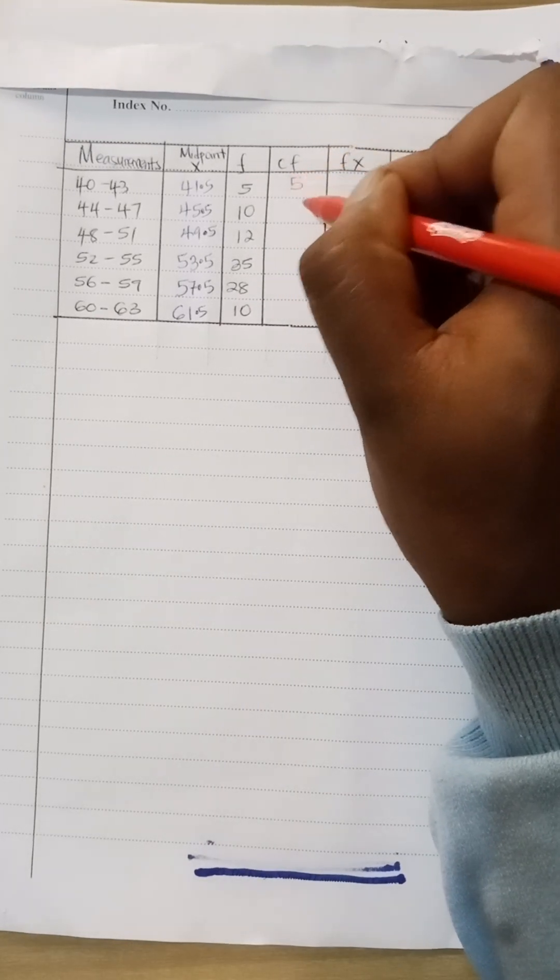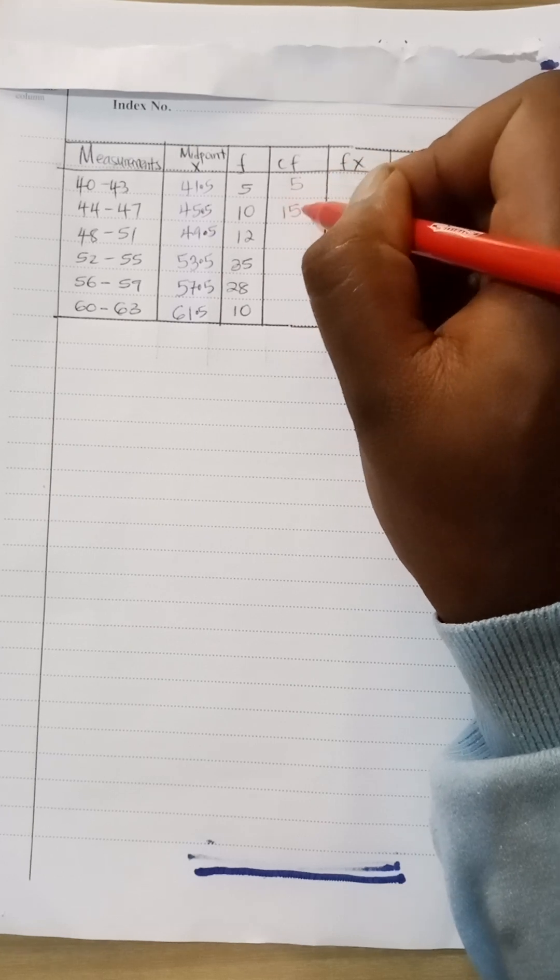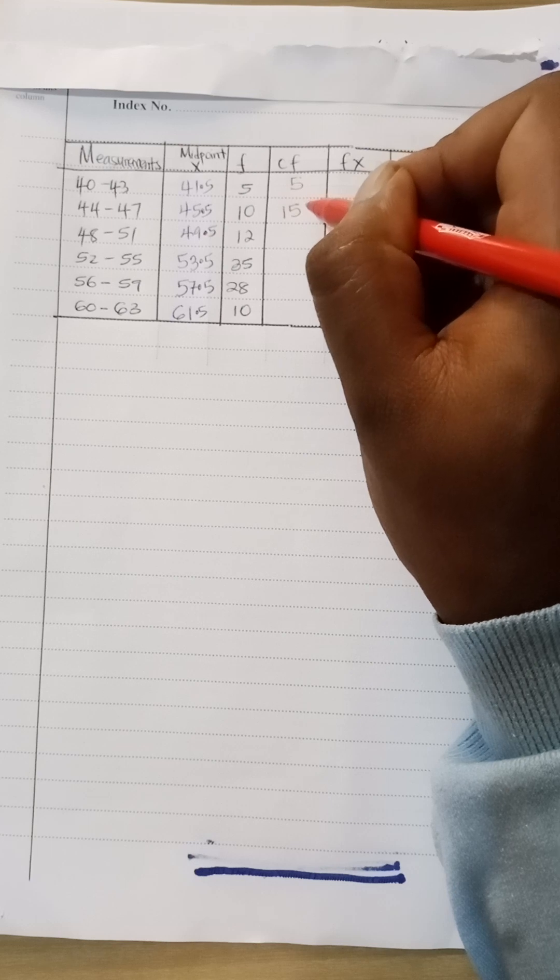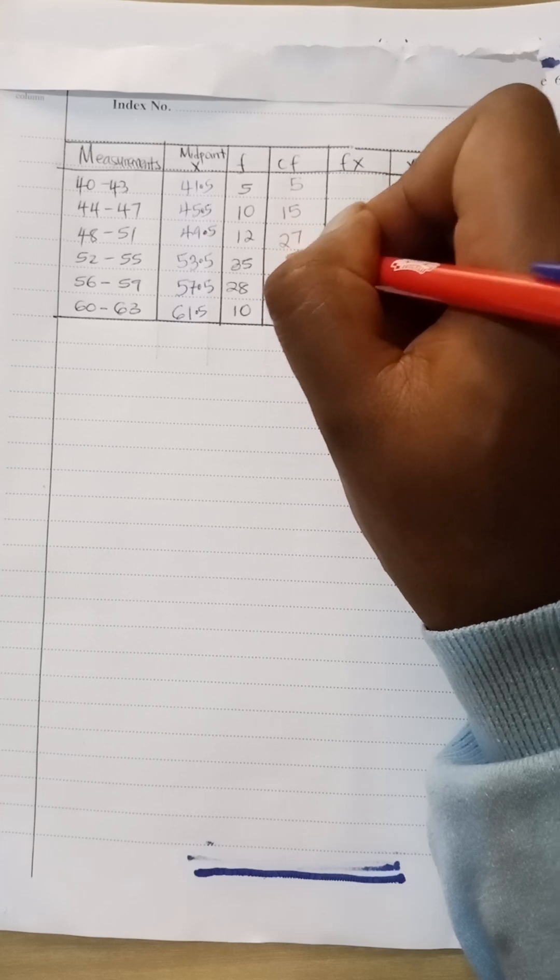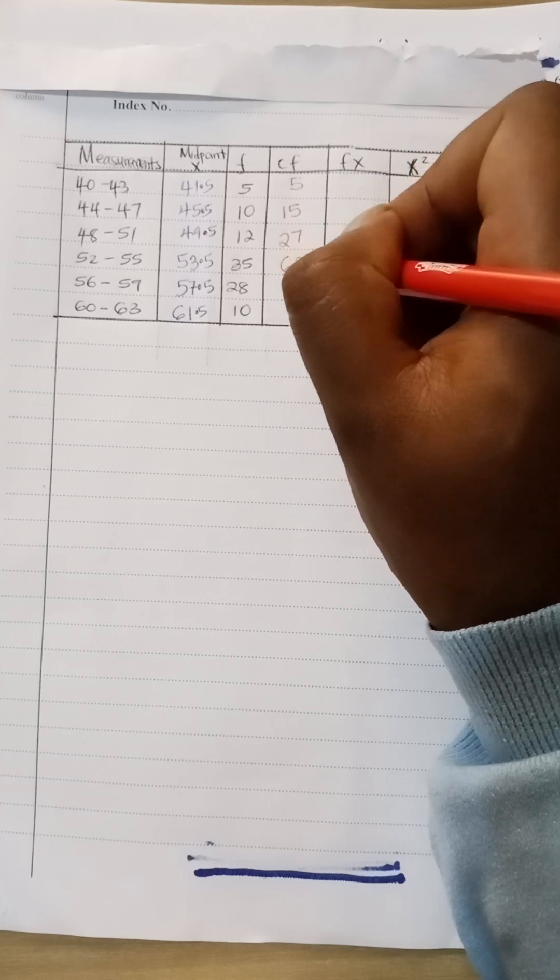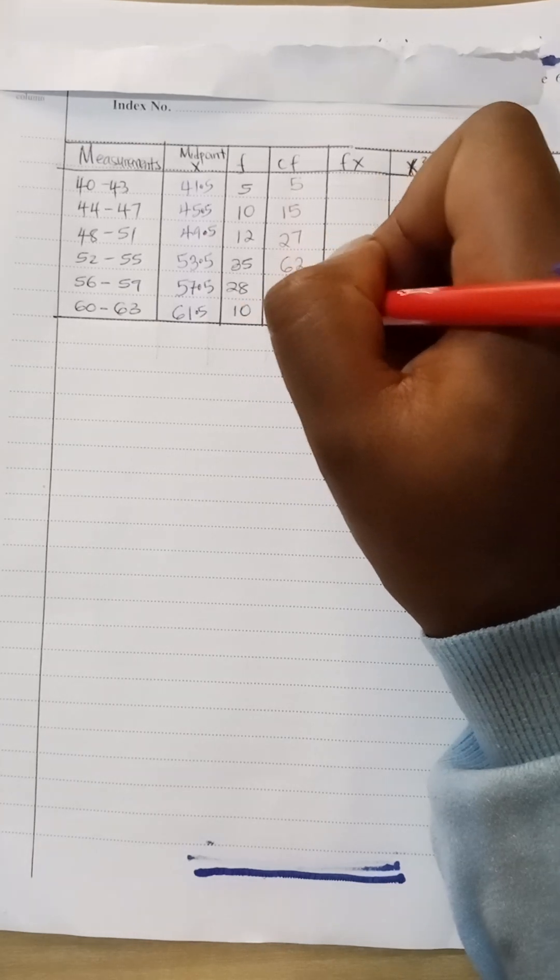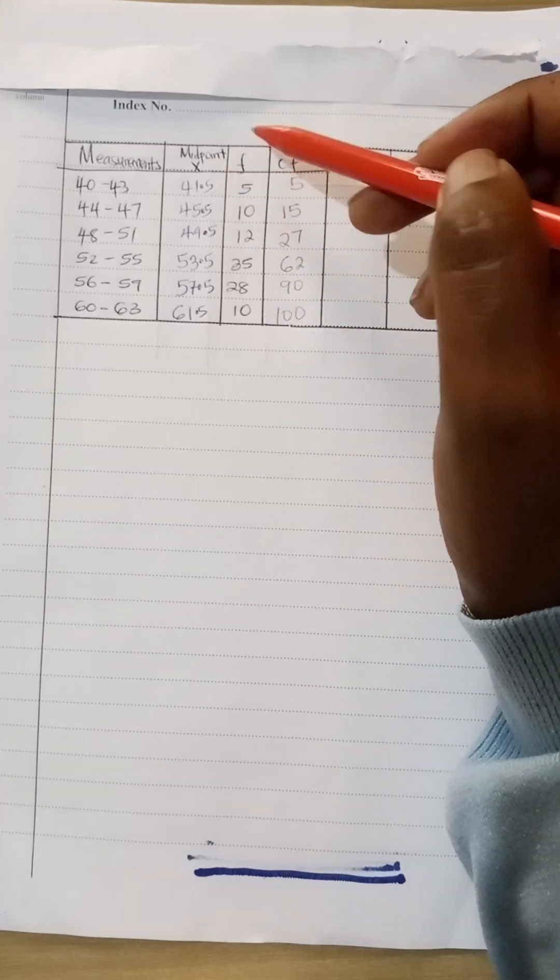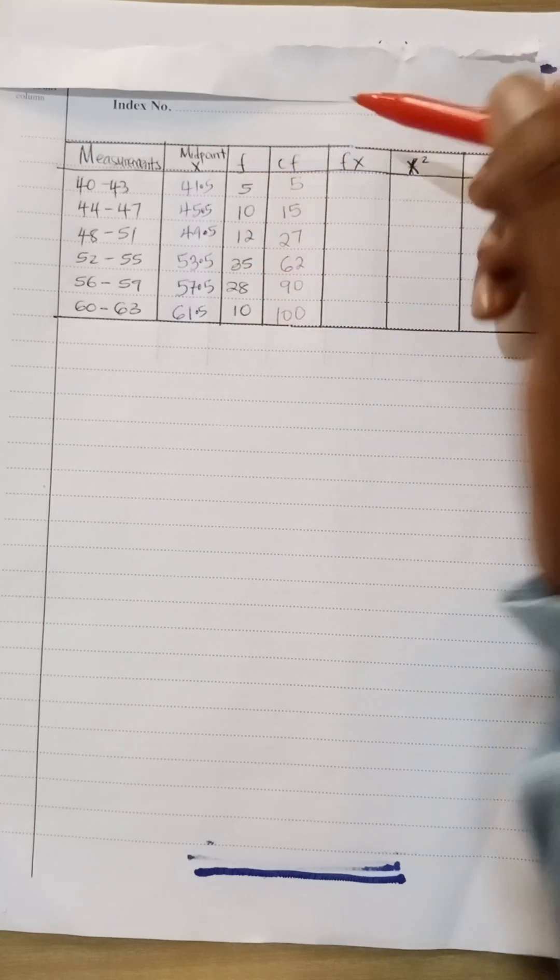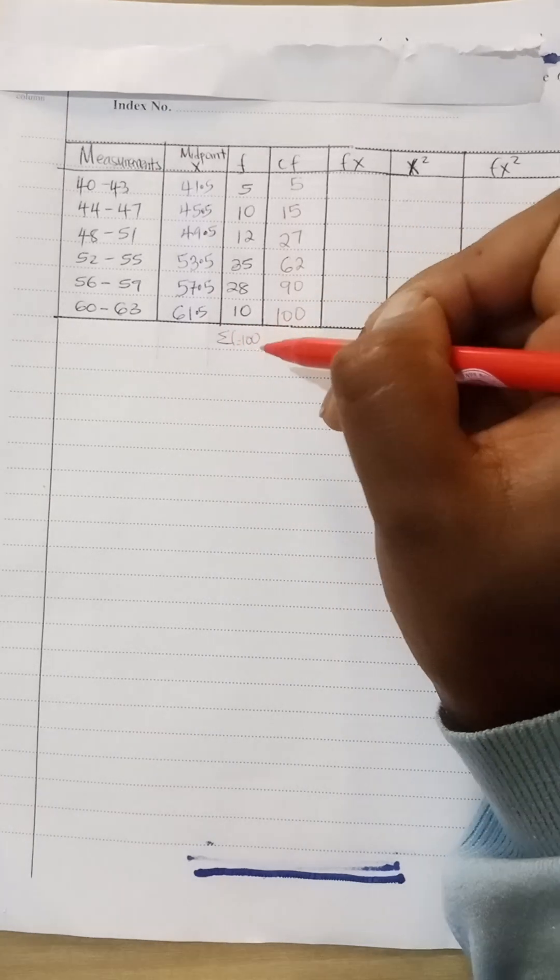Now to get the cumulative frequency, here it is 5, 8 is 5, here is basically 15, then 15 plus 12 that is 27, 27 plus 35 that is 62, 62 plus 28 that is 90, 90 plus 10 is 100. So this cumulative frequency should add up to 100 because the summation here equals to 100.